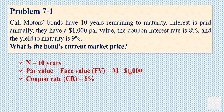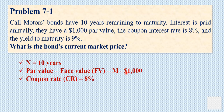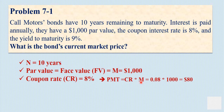The coupon interest rate of the bond, which is the fixed interest rate the investor is going to receive at the end of each period, is equal to 8%. To calculate the dollar coupon payment, we multiply this coupon rate by the $1,000 par value: CR × M = 0.08 × $1,000, which is equivalent to $80.